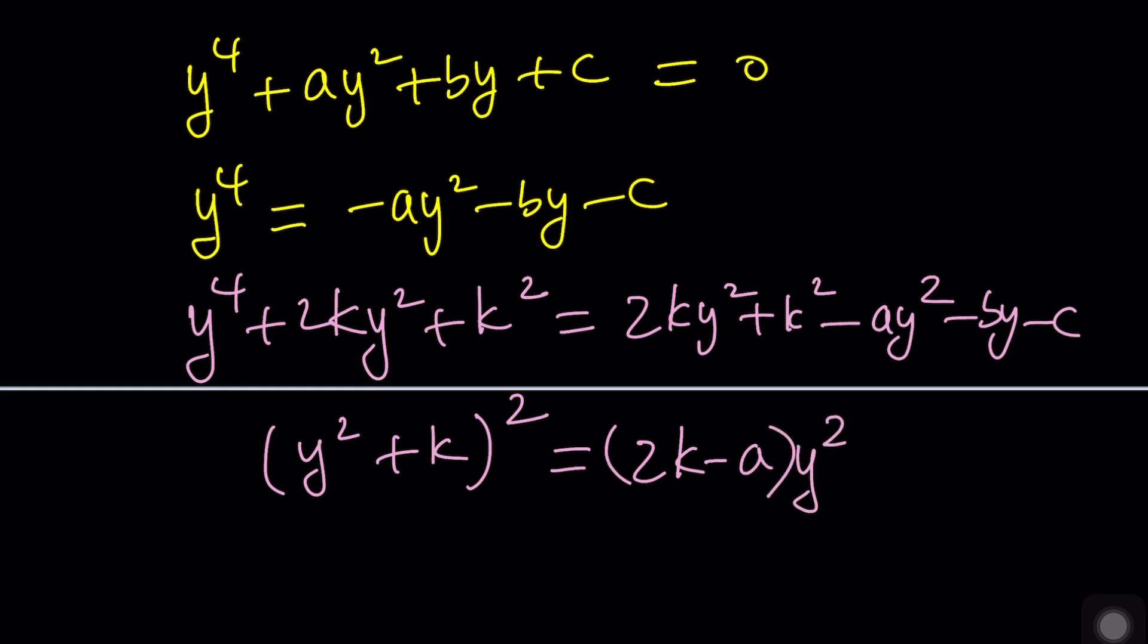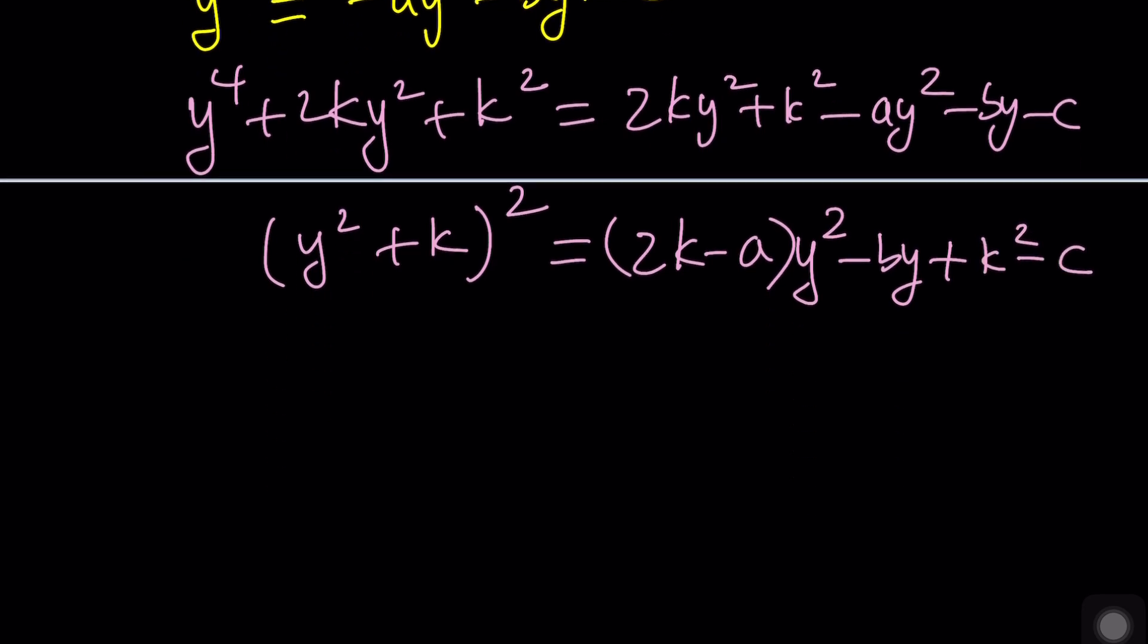So, the right-hand side is a quadratic, and it needs to be a perfect square as well, right? So, how do you make this a perfect square? The discriminant needs to be zero, okay? What's the discriminant? b squared minus 4a and c.